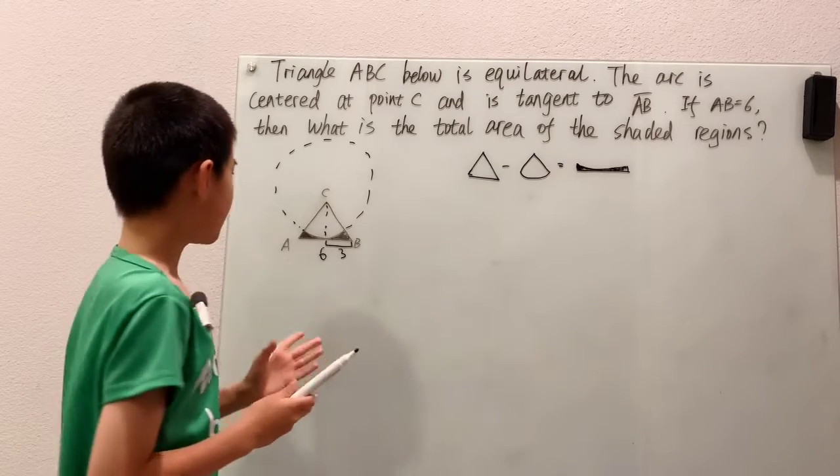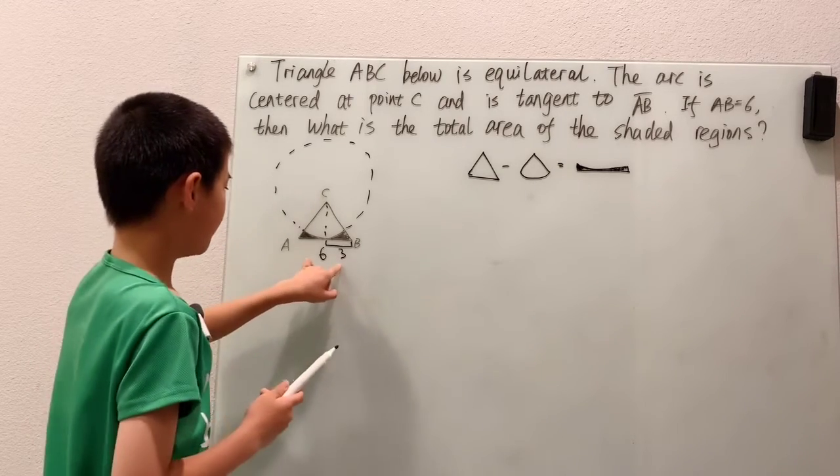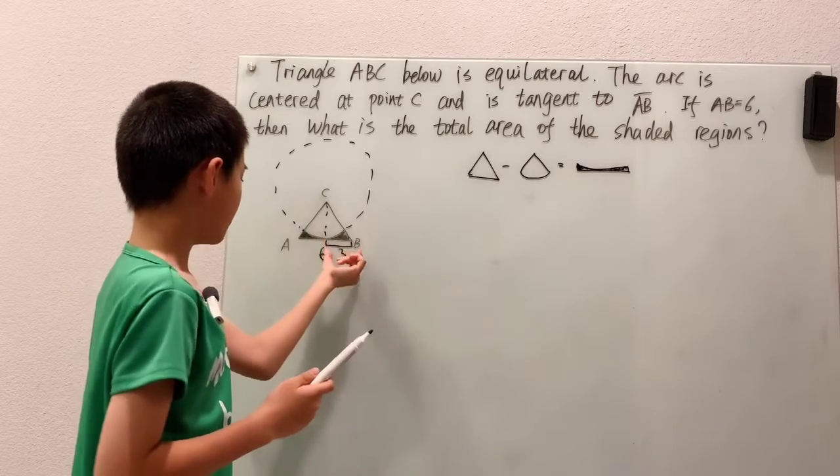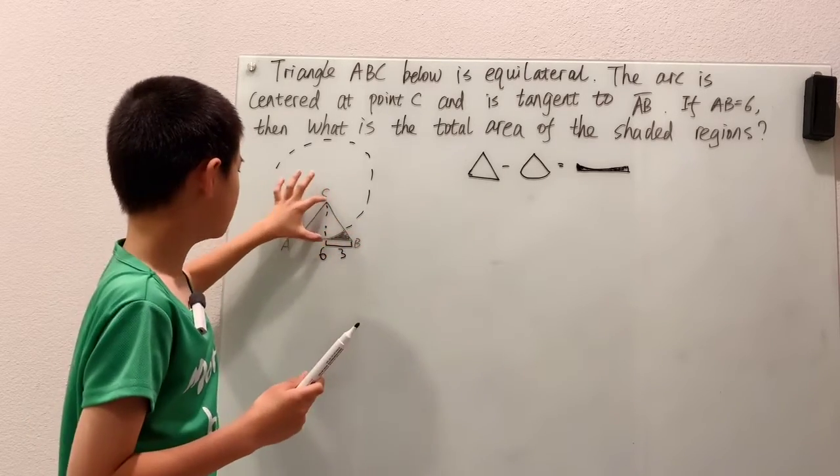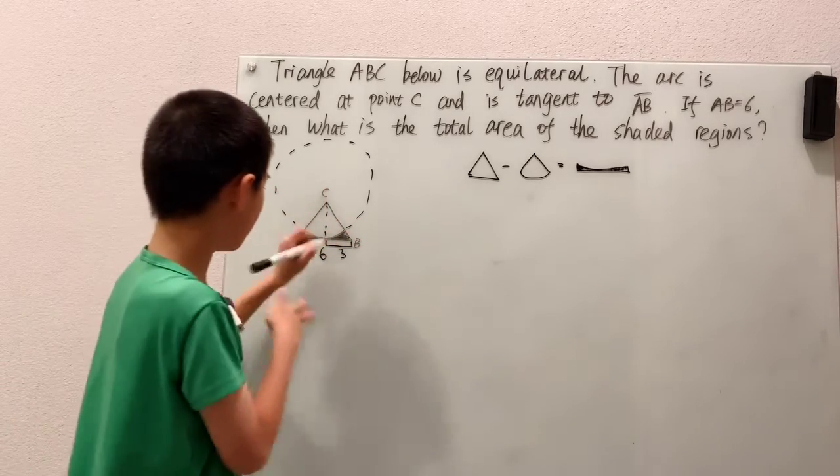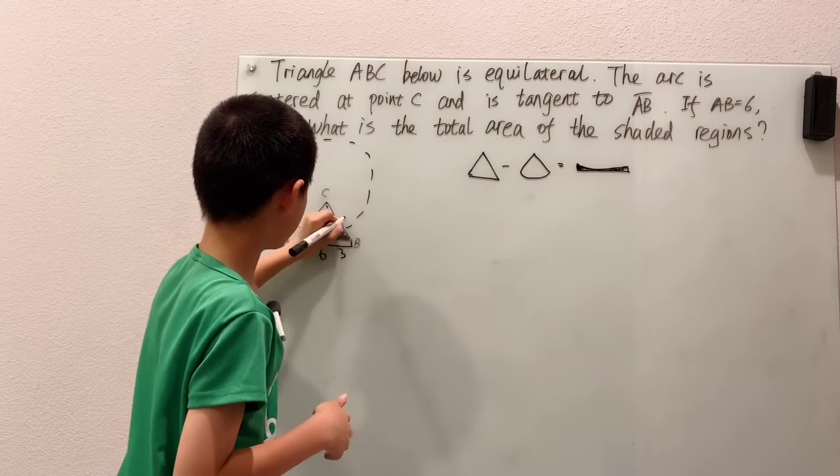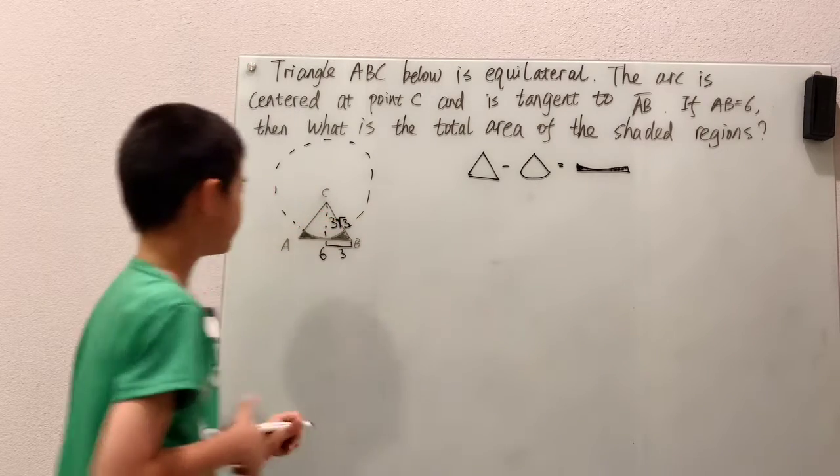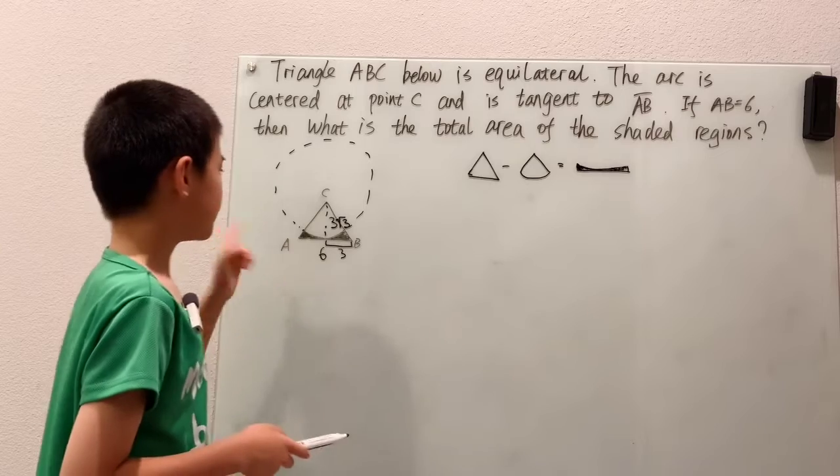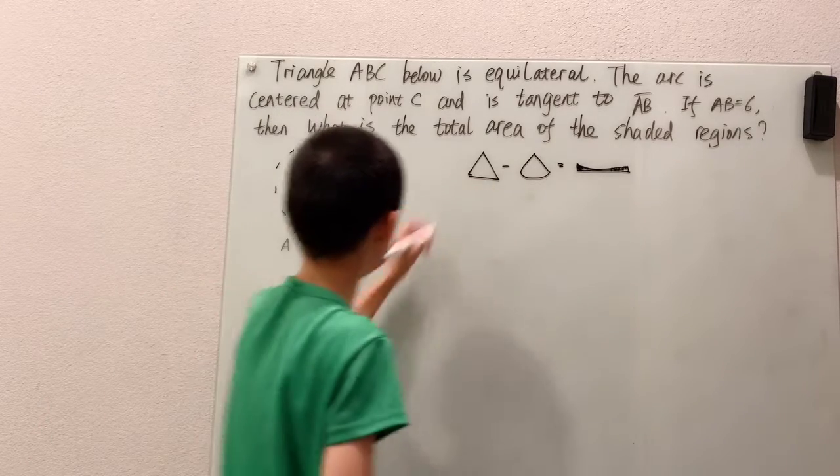Now, a 30, 60, 90 triangle, the rule for that is, well, the short leg is half the hypotenuse, because in here, our height, our long leg is always our short leg times root three, which means our entire triangle up here,